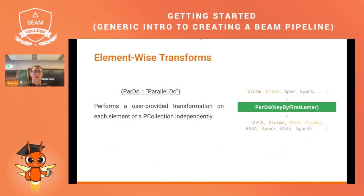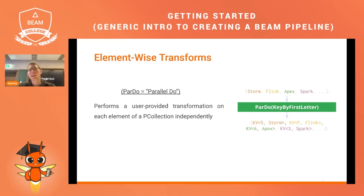Starting with element-wise transforms: these apply a function to each element in a PCollection, making them a powerful tool for data processing tasks like cleaning, enriching, filtering, or aggregating data. They are simple to read and understand, and they add performance because the work can be parallelized and split across multiple servers — the jobs can run in parallel and don't require just one server.